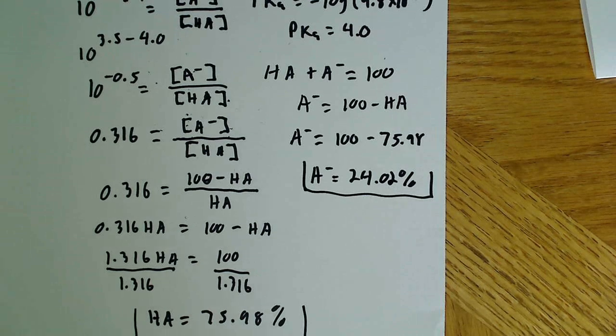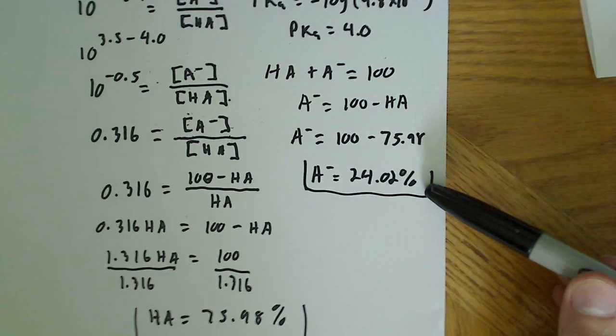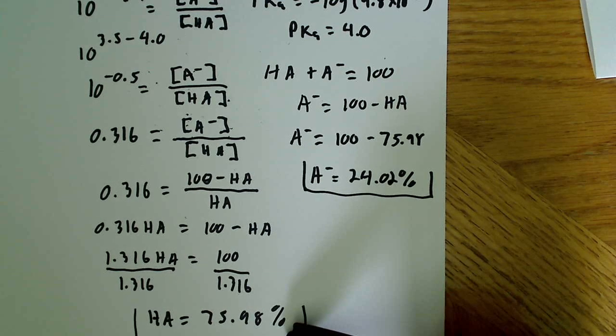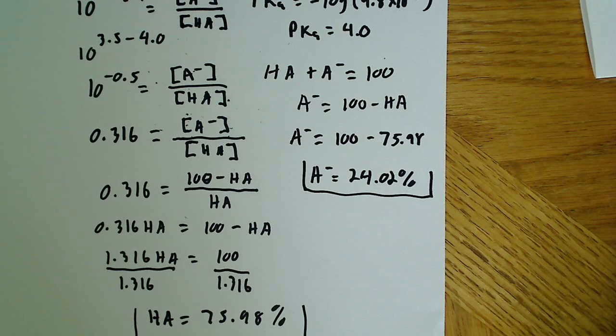So, that's pretty much the entire problem right there. We're going to wind up with 24.02% of deprotonated barbituric and 75.98% of protonated.